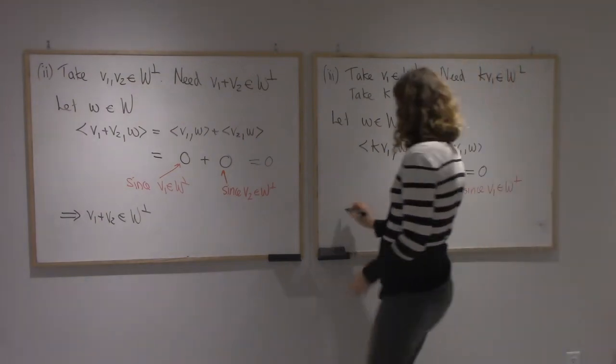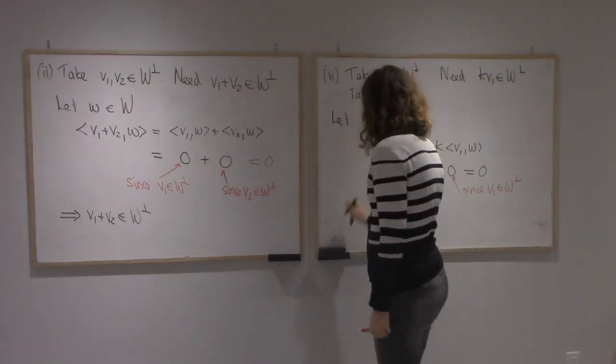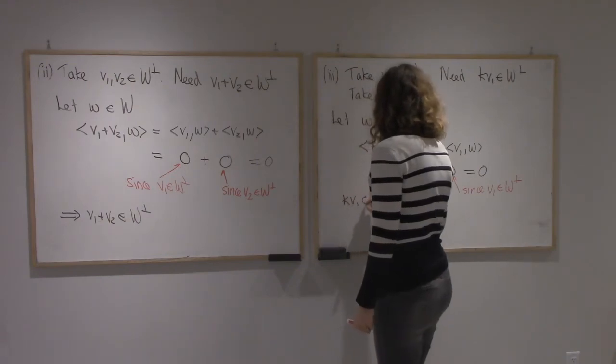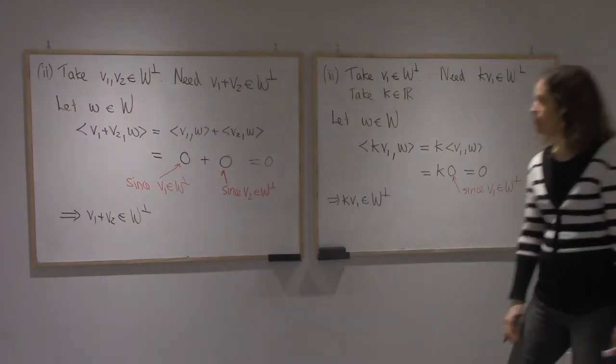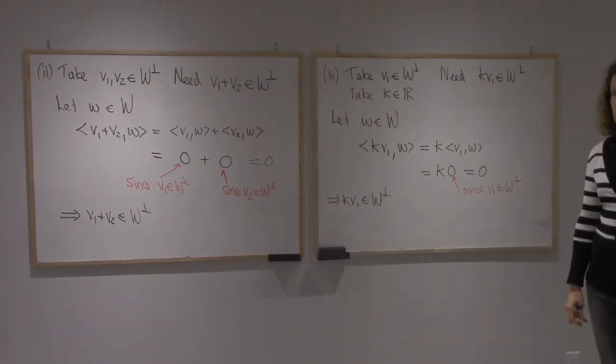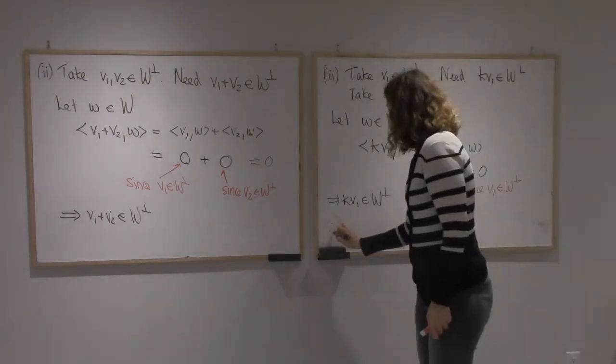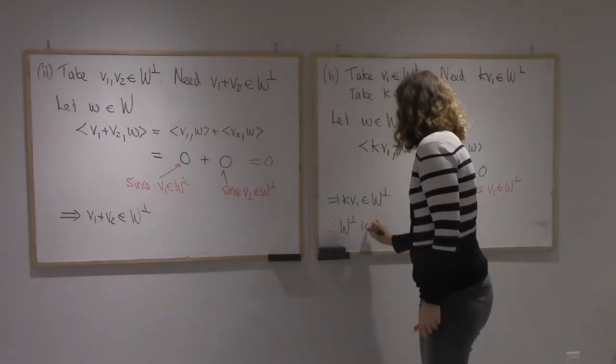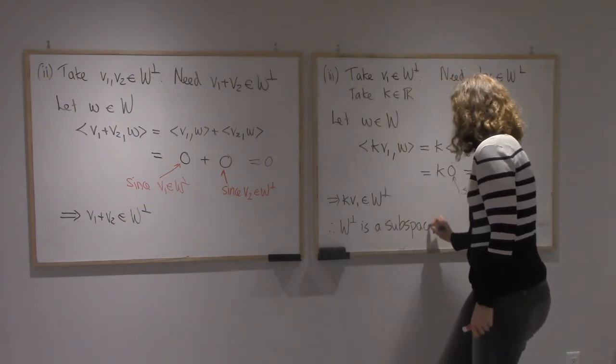And so kv1 is in W-perp. Alright, so we proved all three properties and that means that W-perp is a subspace of V.